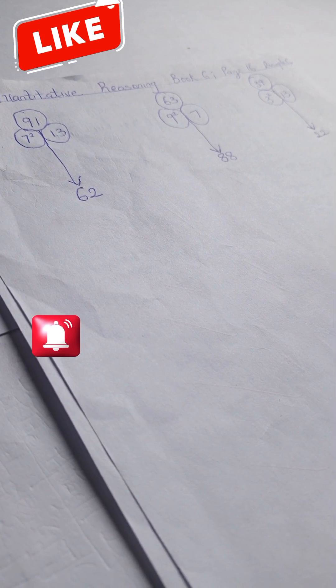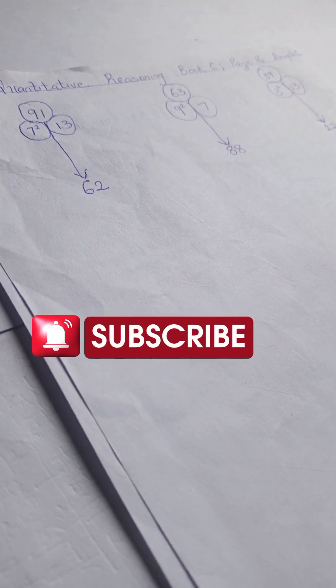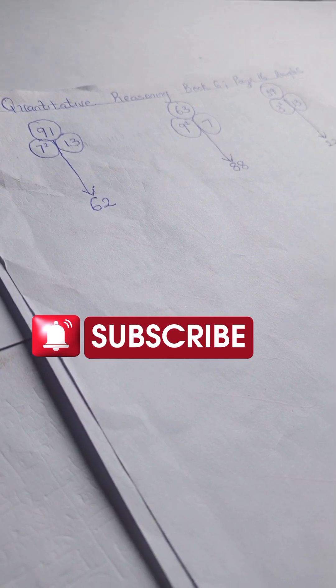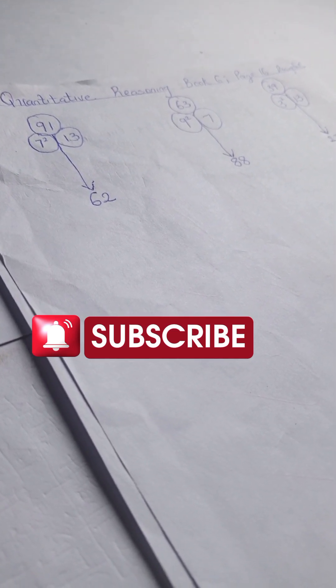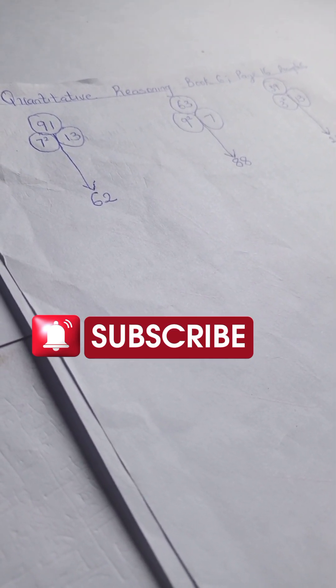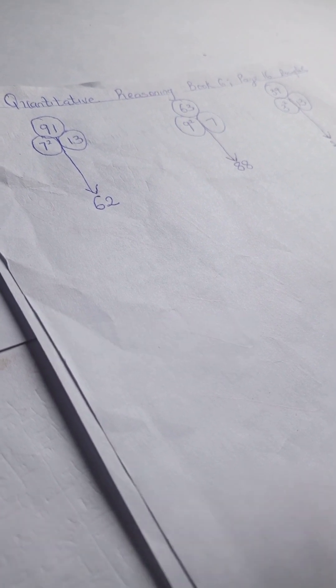And to our subscribers, thank you for staying with us. Okay, so we have this example: we have 91, 7 squared, 13, 62. In here we have 63, 9 squared, 7, 88.